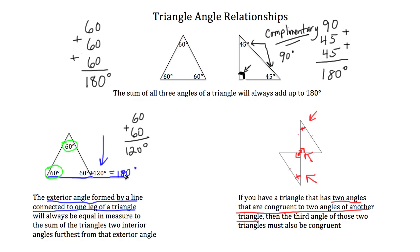So we know that if we have one triangle and another triangle that already have two congruent angles, then their third angles — which I'm highlighting in green — must also be congruent. That's a very important relationship. You're going to see that in a lot of problems.